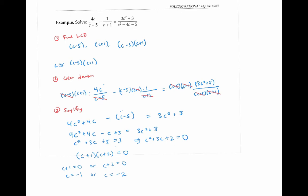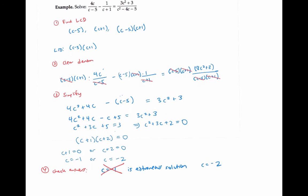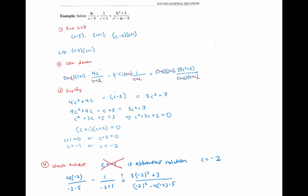Now we still need to check our answers. Without even calculating anything, I can see that c equals negative one is not going to work, because if I plug it into this denominator here, I get a denominator of zero, which doesn't make sense. So c equals negative one is an extraneous solution — it doesn't actually satisfy my original equation, so I can just cross it right out. C equals negative two doesn't make any of my denominators zero, so if I haven't made any mistakes it should satisfy my original equation. I'll plug it in to be sure, and after some simplifying, I get a true statement. So my final answer is c equals negative two.